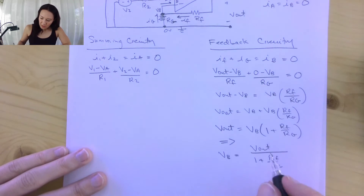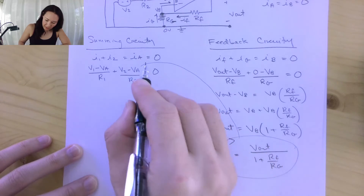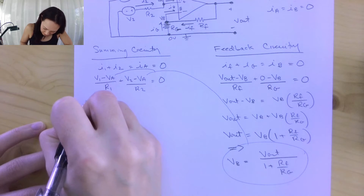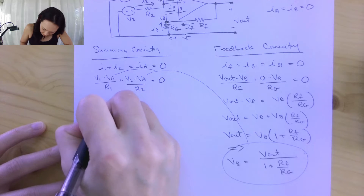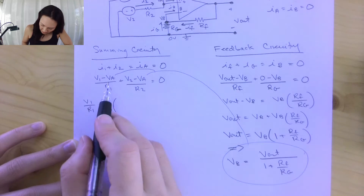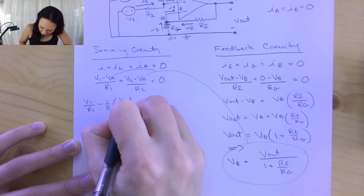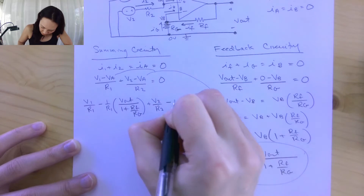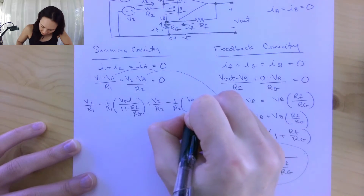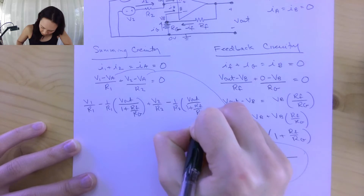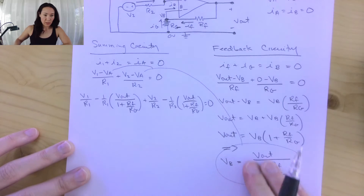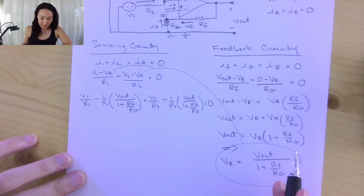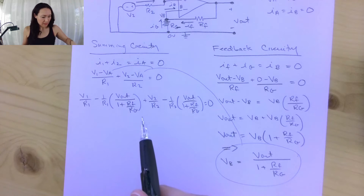Now I can use the ideal op-amp approximation VA equals VB, and substitute this expression for VB wherever I see VA in the summing circuitry equation. So I replace each VA with Vout over 1 plus RF over RG. This gives me V1 over R1 minus 1 over R1 times Vout over 1 plus RF over RG, plus V2 over R2 minus 1 over R2 times Vout over 1 plus RF over RG, all equal to zero. I took my feedback circuitry result and substituted it into the summing circuitry equation, using circuit analysis on both sides of the op-amp.